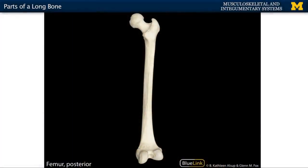Let's discuss the different parts of a long bone. We're going to use this image of a posterior femur quite a bit because it's really nice — it's the longest of your long bones and really nice in terms of visualizing these different parts.